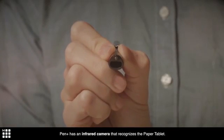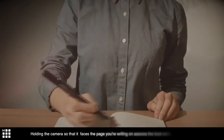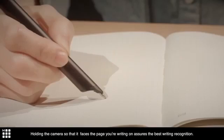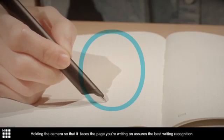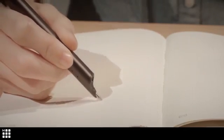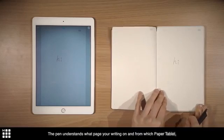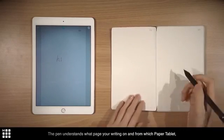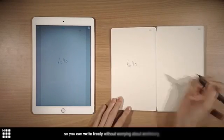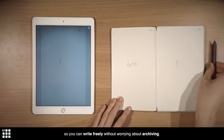So how does it work? Pen Plus has an infrared camera that recognizes the paper tablet. Holding the camera so it faces the page you're writing on ensures the best writing recognition. The pen understands what page you're writing on and from which paper tablet, so you can write freely without worrying about archiving.